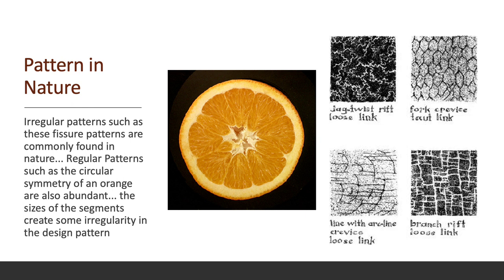Pattern in nature. Irregular patterns such as fissure patterns are commonly found in nature. Regular patterns such as the circular symmetry of an orange are also abundant. The sizes of the segments of the orange create some irregularity in the design pattern.